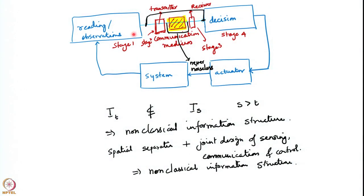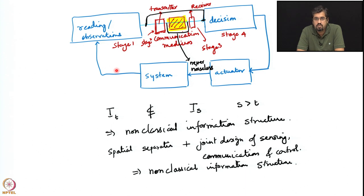Either the problem has a non-classical information structure built into the control actions themselves — that is, the sensing and decision-making blocks — or if you decide to counter the noise by introducing a transmitter and receiver doing encoding and decoding, then those transmitters and receivers have non-classical information structure and need to be incorporated in your design. The optimal design then involves a joint design of all of these. We have not yet shown that joint design is better than separate design — this is something we will come to in today's lecture.